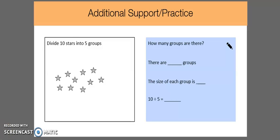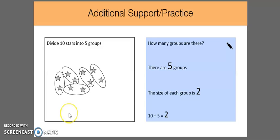Okay, now we're going to move on to the next part. In this problem, we see that if we're dividing 10 stars into 5 groups, I put circles around each of the groups. So if we count, there are 1, 2, 3, 4, 5 groups and each of the groups have 2 stars.